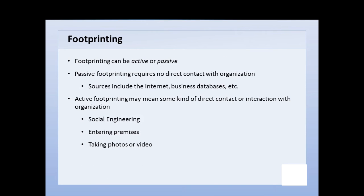Footprinting can be either active or passive. Passive footprinting means there's no direct contact with the organization — we don't actually hack or scan them. We gather information outside the confines of the organization itself. We might use the internet, business databases, and things of that nature. It's pretty much any information we can find online that's available to the public.